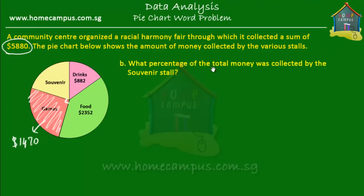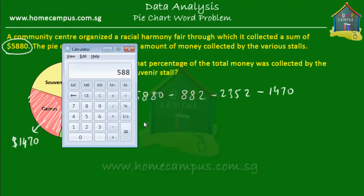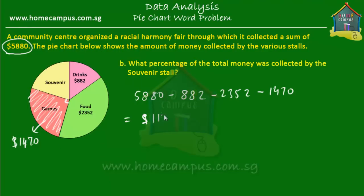The next question is: what percentage of the total money was collected by the souvenir stall? We don't know how much the souvenir stall collected, but we can find that out because we know all four stalls collected $5,880 together and we know how much the other three collected. So we subtract: $5,880 minus what the drink stall collected, minus what the food stall collected, minus what the game stall collected. That gives us $5,880 minus $882 minus $2,352 minus $1,470, which equals $1,176.